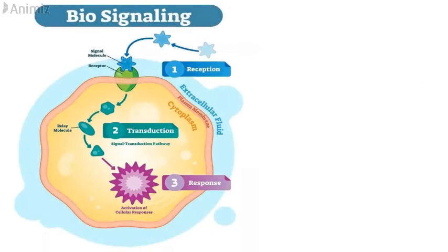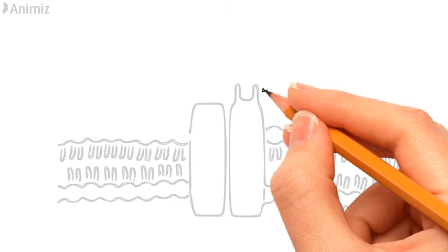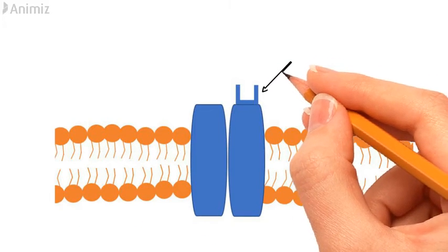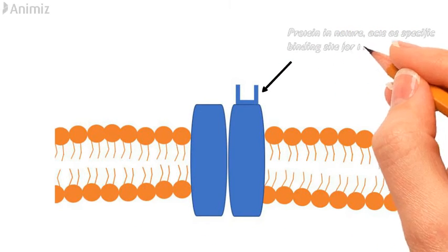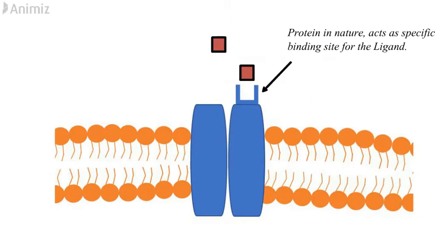Two cells communicate with each other with the help of a receptor. The first cell sends a signaling molecule called a ligand, which is received by the other cell. This leads to downstream events called transduction, and finally a response is produced within the cell. A receptor is a protein in nature and acts as a specific binding site for the ligand.